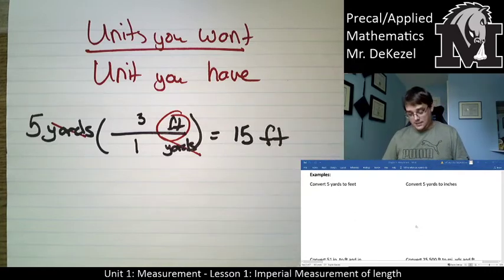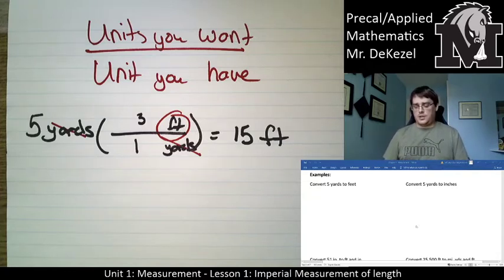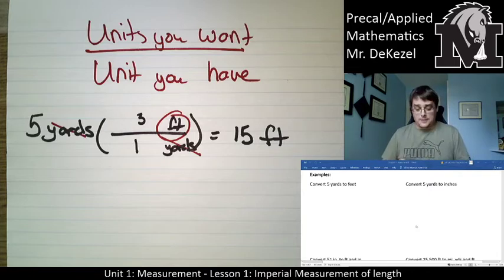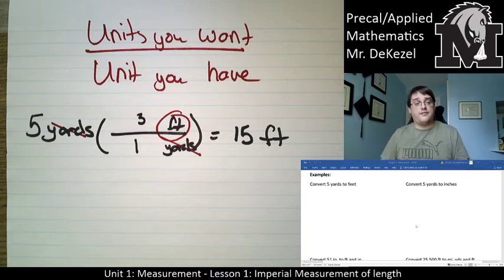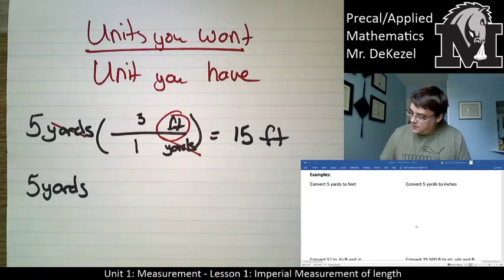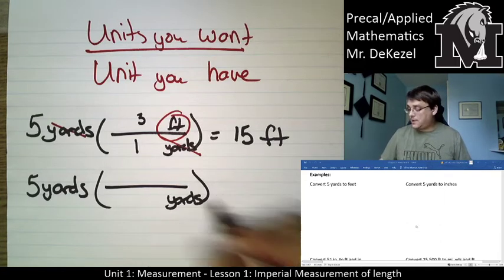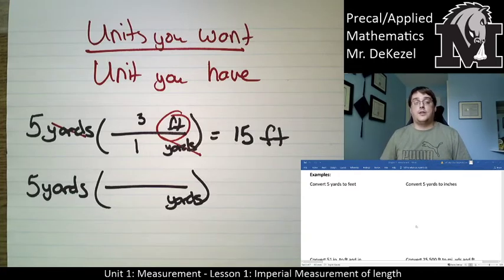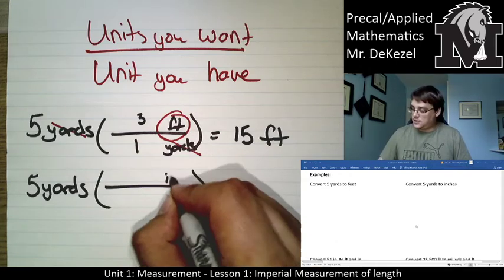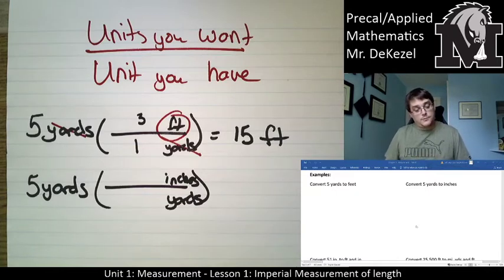This works for every set of units, no matter what units you're changing from or into — as long as you put what you have on the bottom and what you want on the top. Next example: convert five yards to inches. Five yards — place the brackets. The unit we have is yards, so yards goes on the bottom. The unit the question wants is inches, so inches goes on top. From page two, one yard equals 36 inches.